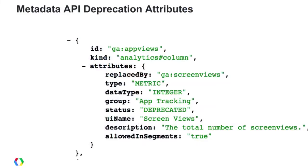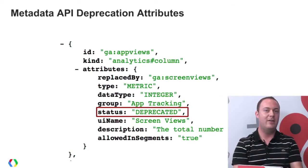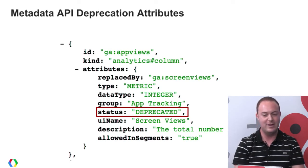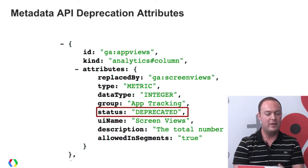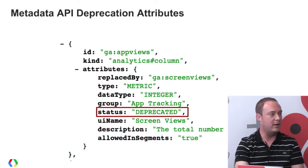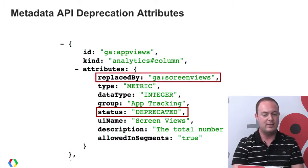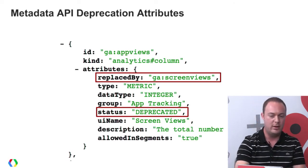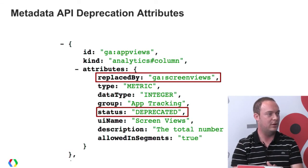Let's see how these attributes manifest in the actual response. You'll see attributes like 'status' — when deprecated, this will change from 'public' to 'deprecated'. You should always be checking this value to make sure the dimensions and metrics you're using are still valid. If it changes to 'deprecated', check if it's been replaced by a different ID. We'll include the 'replacedBy' attribute, which points to the ID of the dimension or metric replacing this particular one.